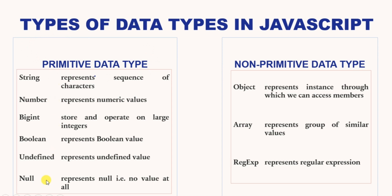We have six types of primitive data types. First is string, used to represent a sequence of characters. Then we have the number data type, used to represent numeric values like 10.1, 20, and so on. Then we have BigInt, used to store and operate on large integers. Then boolean, used to represent a boolean value. We have undefined, for values declared but not assigned. Finally, null represents no value at all. Let's take a few examples of all these primitive data types one by one.